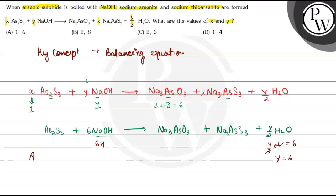Now the reaction comes out to be As2S3 plus 6 NaOH gives Na3AsO3 plus Na3AsS3 plus 3 H2O.